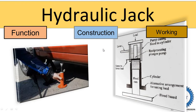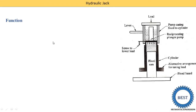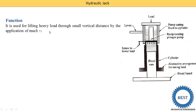So first we start with the function. The function of a Hydraulic Jack is that it is used for lifting the heavy load through a small vertical distance by the application of much smaller effort. Our car has a heavy weight and we use the jack for raising the car for replacing the tire. So by giving a very small amount of effort, we lift our car up to a small vertical distance. This is the function of a Hydraulic Jack.